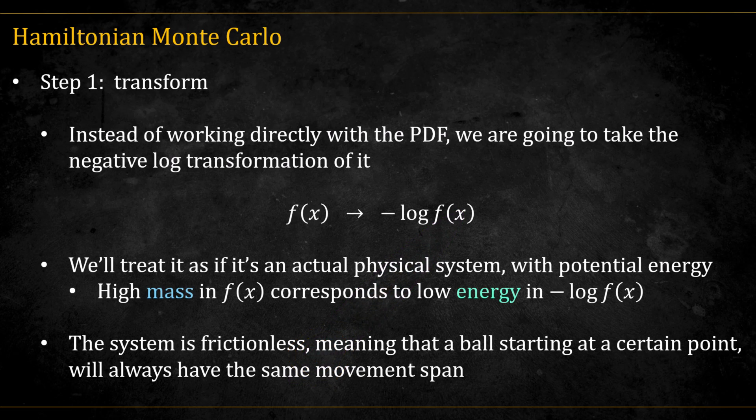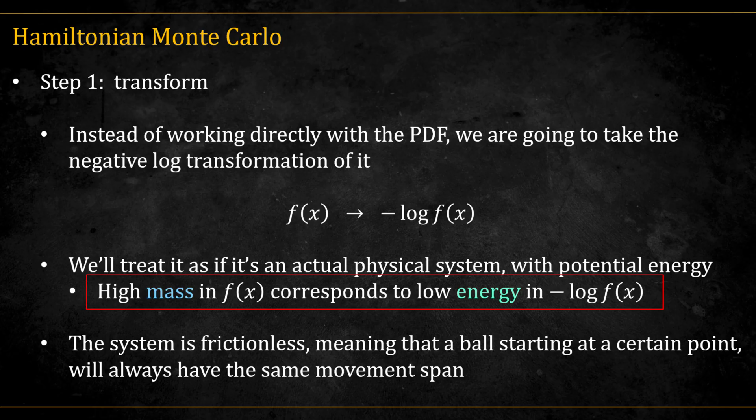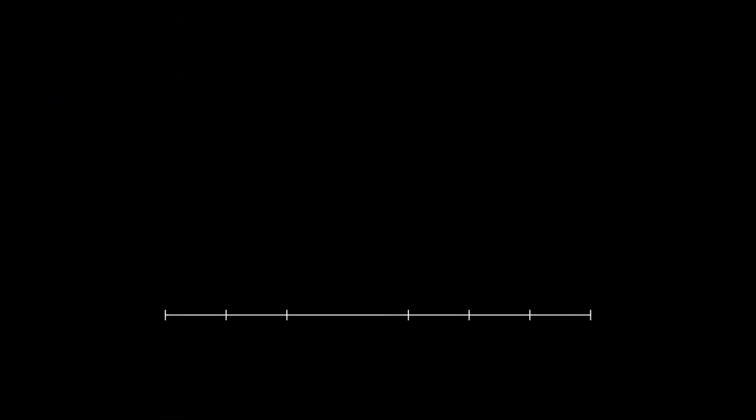The first step is to apply a negative log transformation to the distribution. This lets us reinterpret it as a physical surface that we can model in terms of potential and kinetic energy. Regions where f is high map to areas of low potential energy in negative log f. We assume this system is frictionless, so a ball placed on the surface would always conserve its total energy and trace out the same trajectory. Let's see this in action. In this animation, we start with the target distribution and transform it using the negative log.